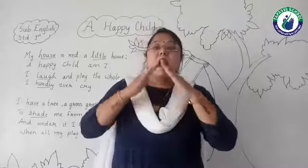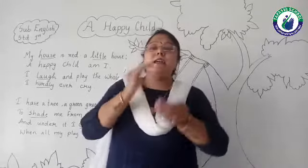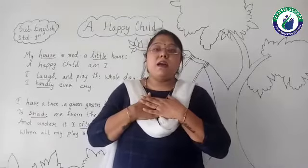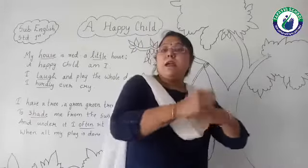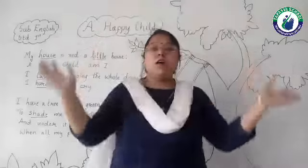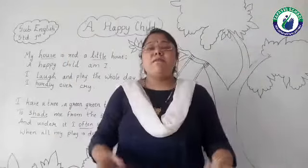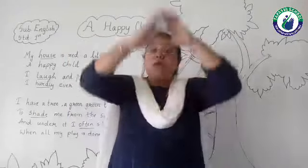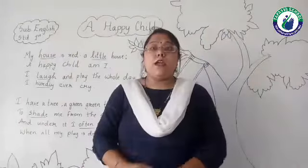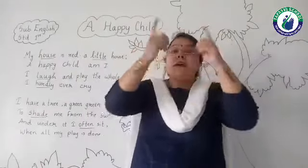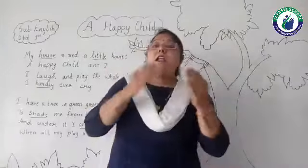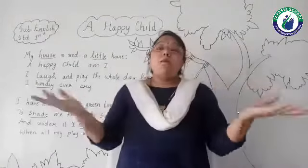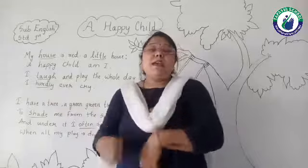My house is red, a little house, a happy child am I. I laugh and play and hold in love, I hardly ever cry. I have a tree, a green, green tree, to shade me from the sun. And under it I often sing, when all my play is done.